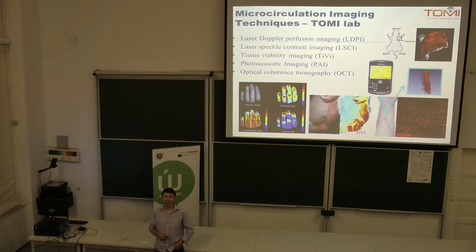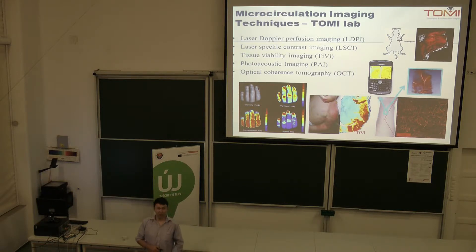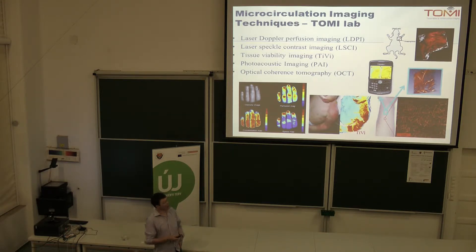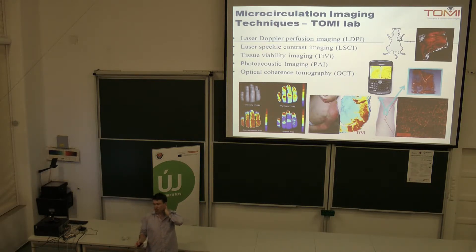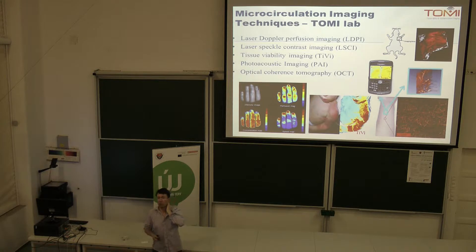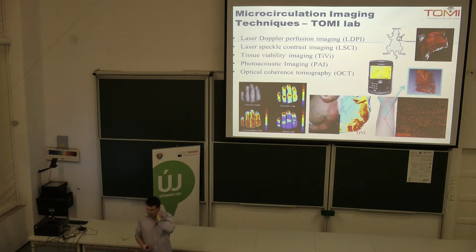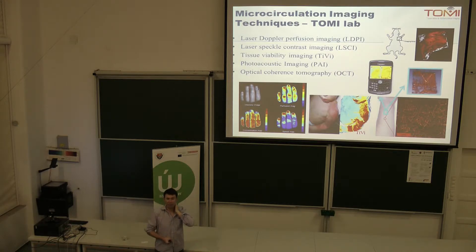I started off with laser Doppler and moved on to using other techniques. We started with laser Doppler with a point measurement, then moved to imaging because imaging becomes much more interesting when comparing what's going on in different areas of tissue. When we had imaging with laser Doppler that was quite slow, so we moved to laser speckle imaging, a faster form but perhaps not as theoretically sound.